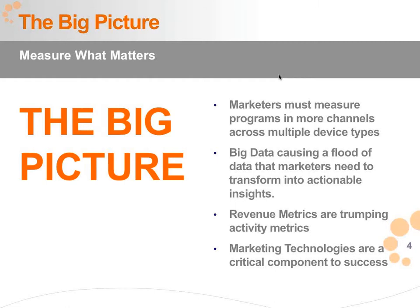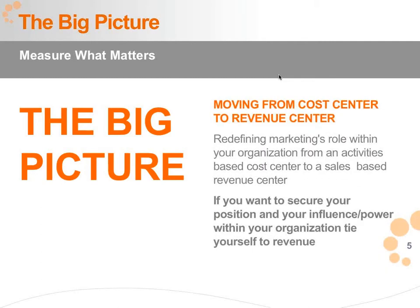One key trend we're seeing is that revenue metrics are trumping activity metrics. For years, marketers have been held accountable for activities — how many trade shows, how many campaigns. Now it's more about revenue impact as the top priority. Marketing technologies are becoming a critical component of that. There are tools now that automate this capture and bring it together in highly visible dashboards. The big trend is moving from a cost center to a revenue center model, shaking up marketing organizations and causing them to rethink their activities and comp plans.